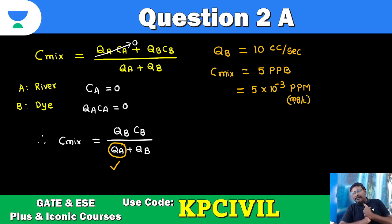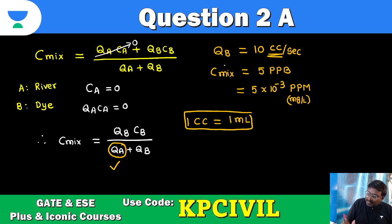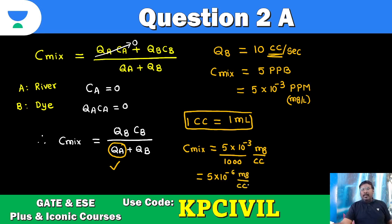This will be mg per liter. It is given in cc. What is cc? 1 cc equals 1 ml. So as discharge is given cc per second, C mix also we are converting per ml. So 5 into 10 raised to minus 3 by 1 liter, 1000 ml, mg per cc. So you take 5 into 10 raised to minus 6 mg per cc. Discharge in cc, C mix in cc.